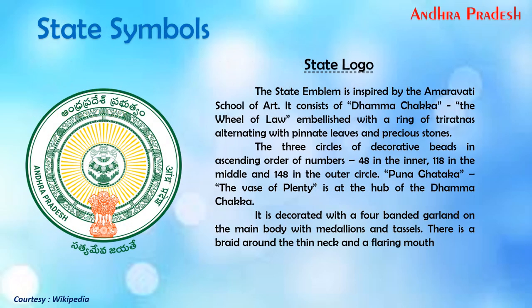Now let's learn about the state symbols. The state emblem is inspired by the Amaravati school of art. It consists of the Dhamma Chakka — the wheel of law — embellished with a ring of Sri Ratnas alternating with pinnate leaves and precious stones. Three circles of decorative beads are arranged in ascending order: 48 in the inner, 18 in the middle, and 148 in the outer circle. The Purna Ghataka, the vase of plenty, is at the hub of the Dhamma Chakka, decorated with a four-banded garland, medallions, and tassels.